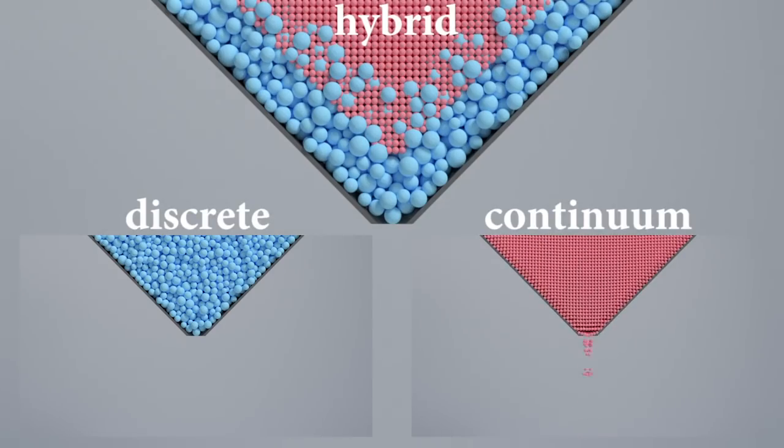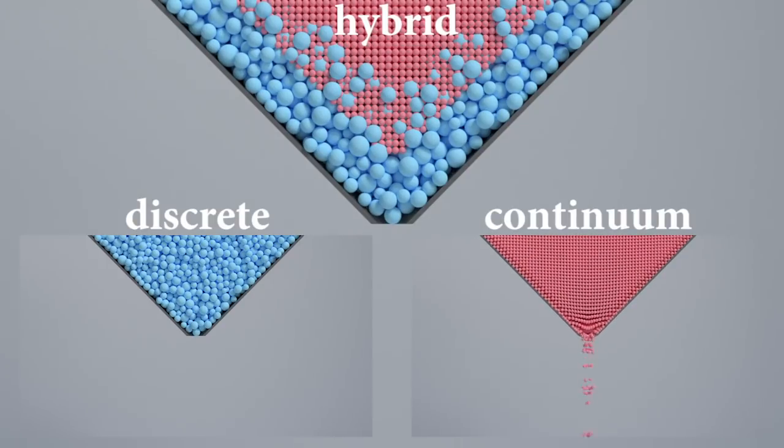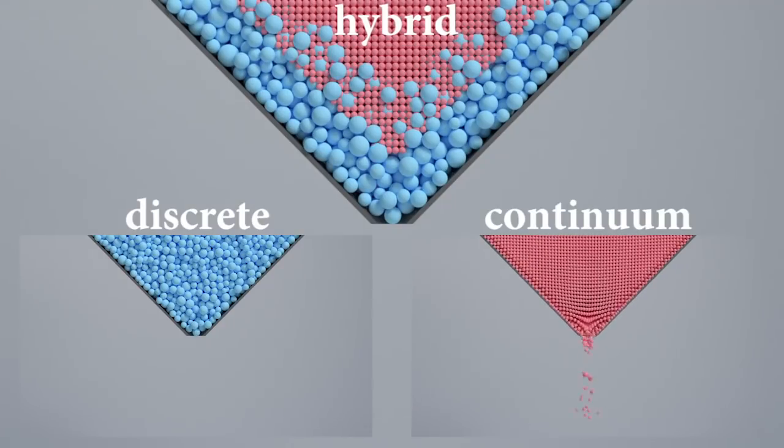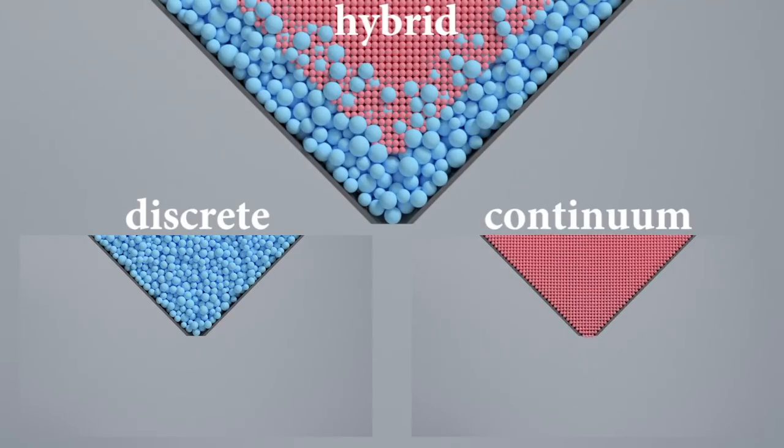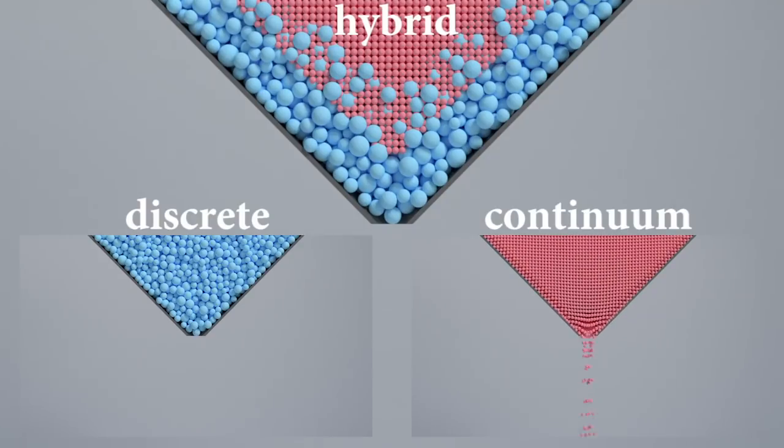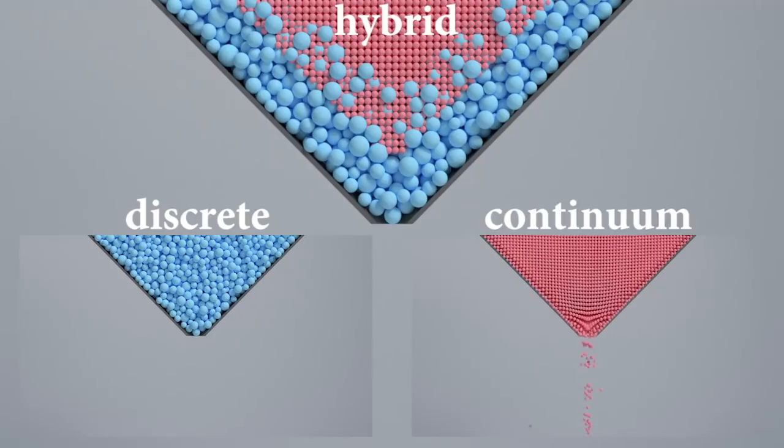With our hybrid model, we are able to capture jamming effects due to so-called finite-size effects. Here we simulate a silo discharge with a small orifice width using a purely discrete algorithm, our hybrid algorithm, and a purely continuum algorithm. Our hybrid simulation, like the purely discrete simulation, clogs within the small orifice width as expected. On the contrary, standard continuum models are unable to capture this finite-size effect.